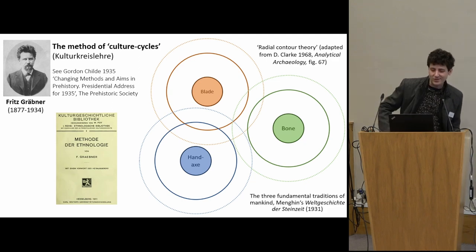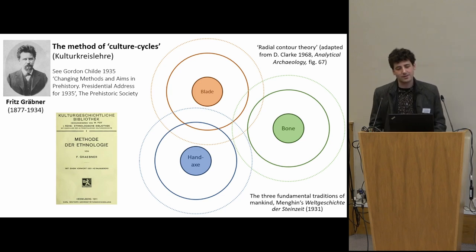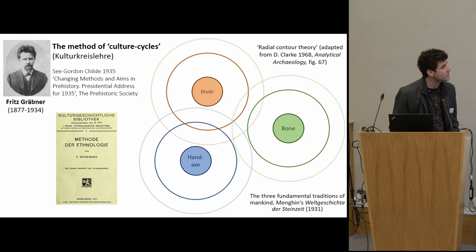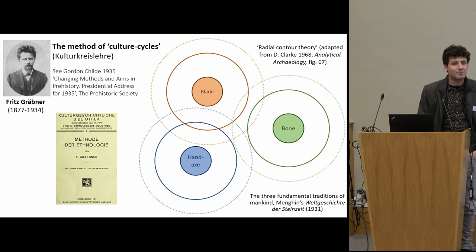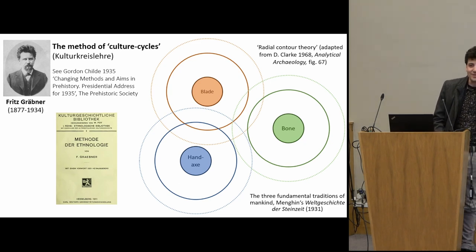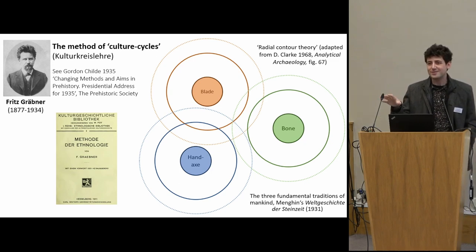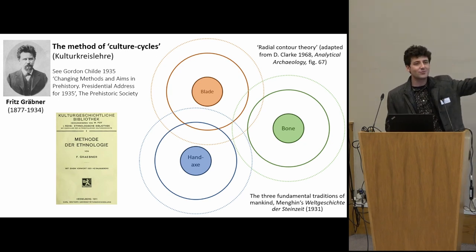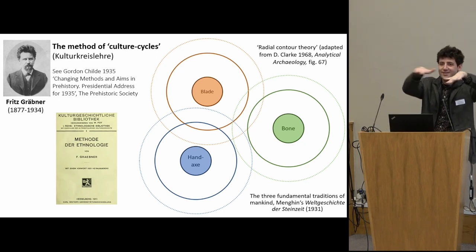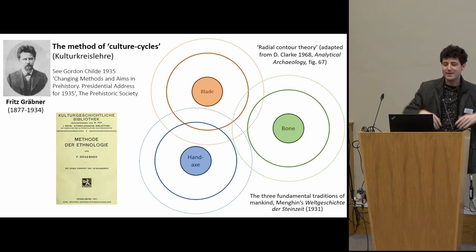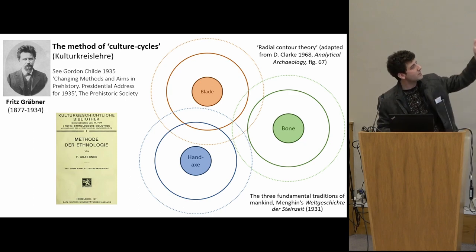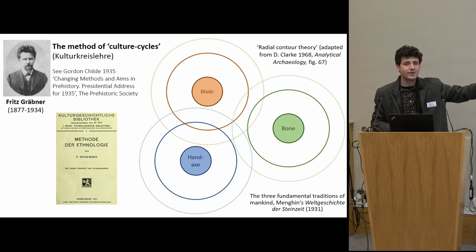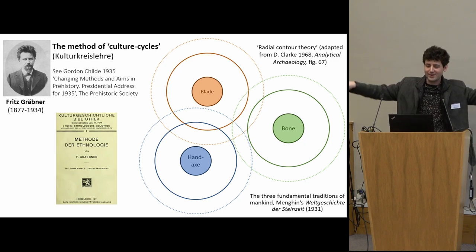One example is Oswald Menghin, working on Weltgeschichte der Steinzeit in 1931. The idea was that there are three primitive centers in the world: one focused on blades, another on bone tools, and another on hand axes. They interact and overlap, but the idea is that they come from different places — blades from Europe, bones from Asia, and hand axes from Africa — and you can trace them in space.